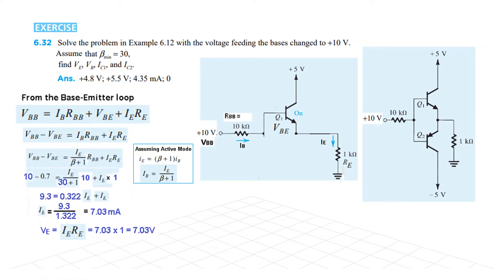So replacing IB by IE over beta plus 1, putting all the values, we calculate IE to be 7.3 milliampere.